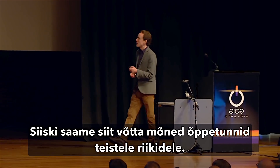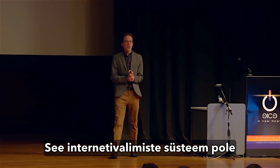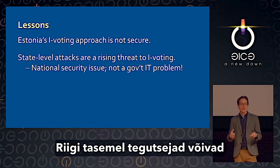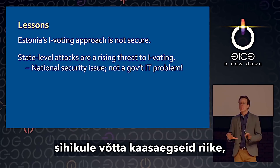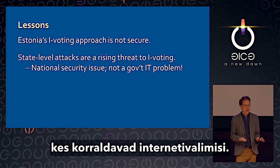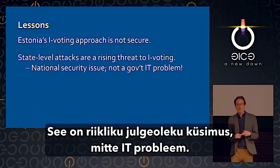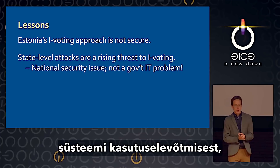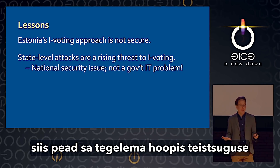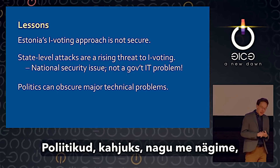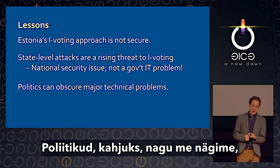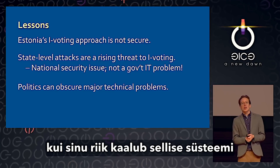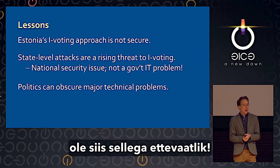We can take away some lessons for other countries. The iVoting system is, in fact, not secure against the kind of national threats — state-level actors — that could potentially be targeting modern countries conducting national-level e-voting. It's a national security issue, not an IT problem. And so if you're even thinking of implementing such a system, you need to be pursuing a totally different threat model and level of defense. Politics, unfortunately, can obscure major technical problems — please be wary of that.